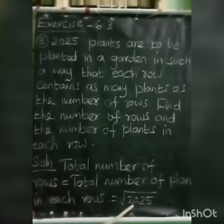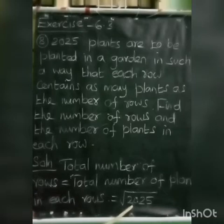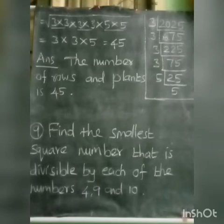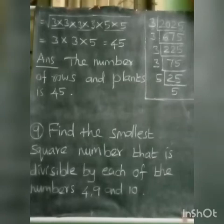That is how you can look at it. The total number of plants — square root — gives the total number of rows, which is equal to the total number of plants in each row. Now to find the square root of 2025. To find the square root, prime factorize the given number.